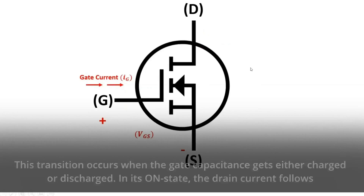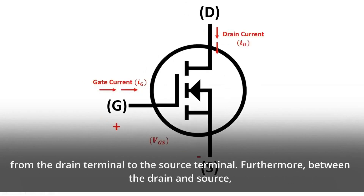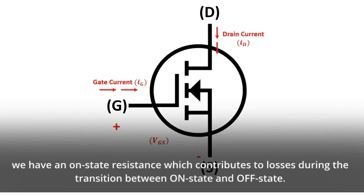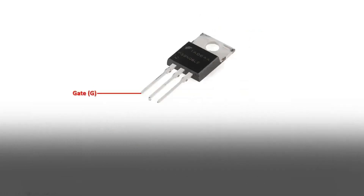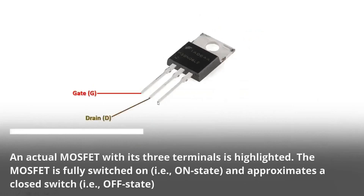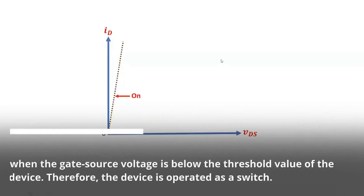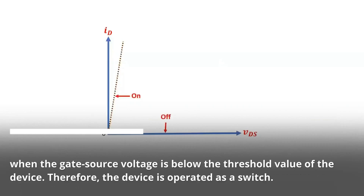In its on-state, the drain current flows from the drain terminal to the source terminal. Furthermore, between the drain and source, we have an on-state resistance which contributes to losses during the transition between on-state and off-state. The MOSFET is fully switched on in its on-state and approximates a closed switch, but operates as an open switch when the gate source voltage is below the threshold value. Therefore, the device is operated as a switch.